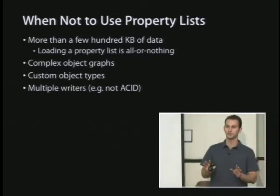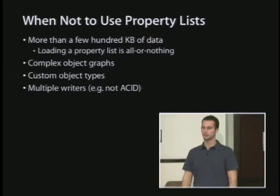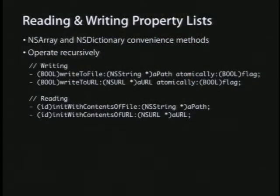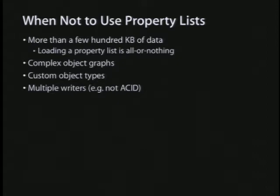The API for loading property lists is a couple of methods on NSArray and NSDictionary — the containers for these property list types. You can write to files and write to URLs, and similarly you can init a dictionary or array with a file or a URL. You can actually load property lists over the internet with the URL form. When you create your property list, you have an object with a plus-one retain count, so you have to release it, auto-release it, or keep it around.